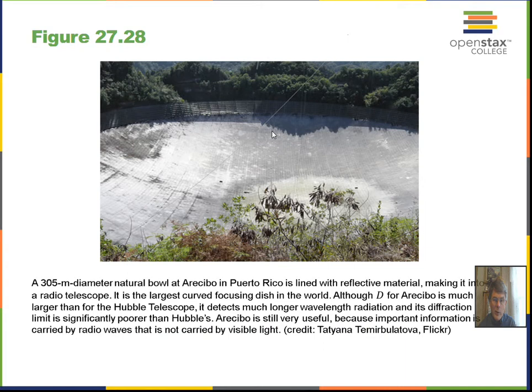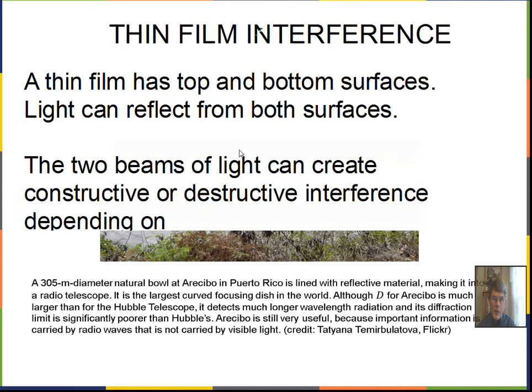Radio telescopes have a harder problem resolving objects. The equation 1.22 lambda over d gives the angle to the first minimum, and that angle depends on wavelength. Radio telescopes use radio waves with much longer wavelengths than visible light, so radio telescopes have poor resolution as a single telescope. That's partly why they're built large — to improve resolution and to gather enough energy. Radio astronomers do have some tricks to improve resolution, but we won't go into that.